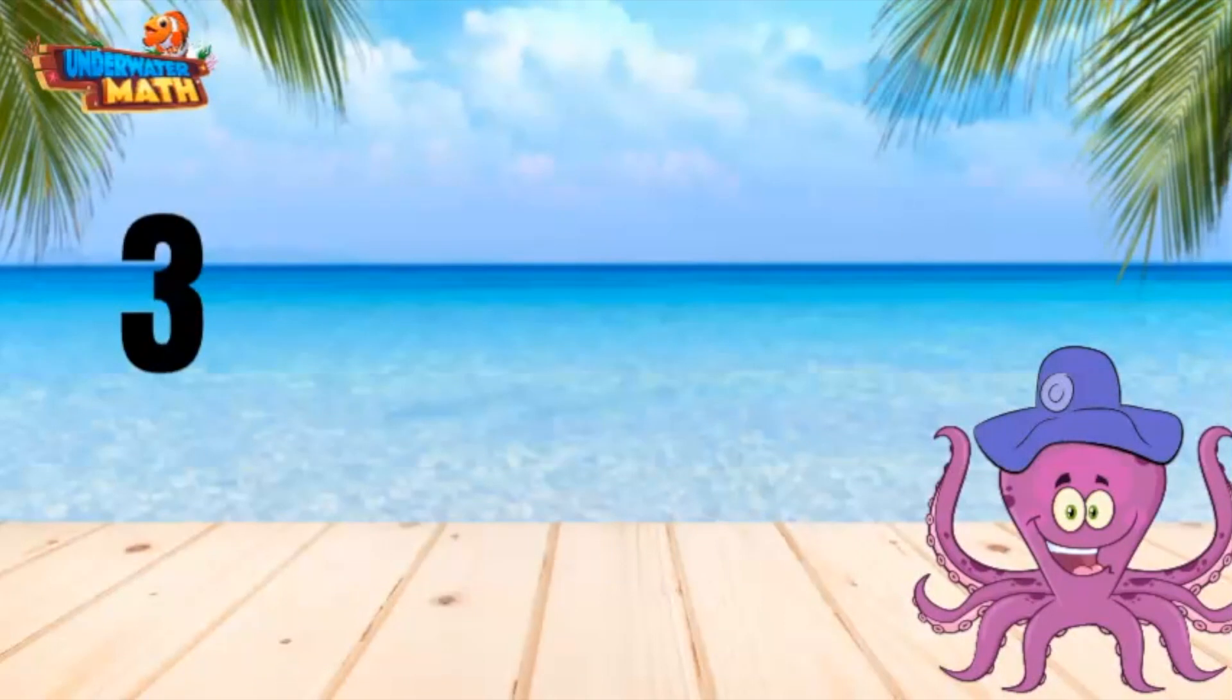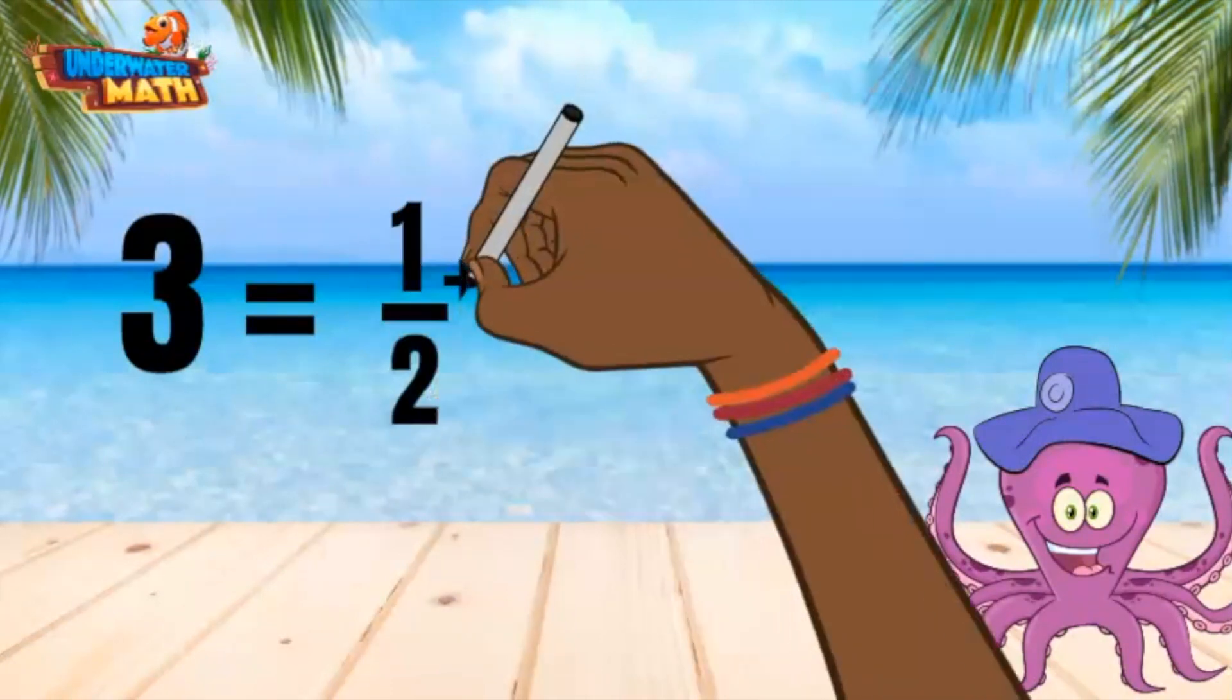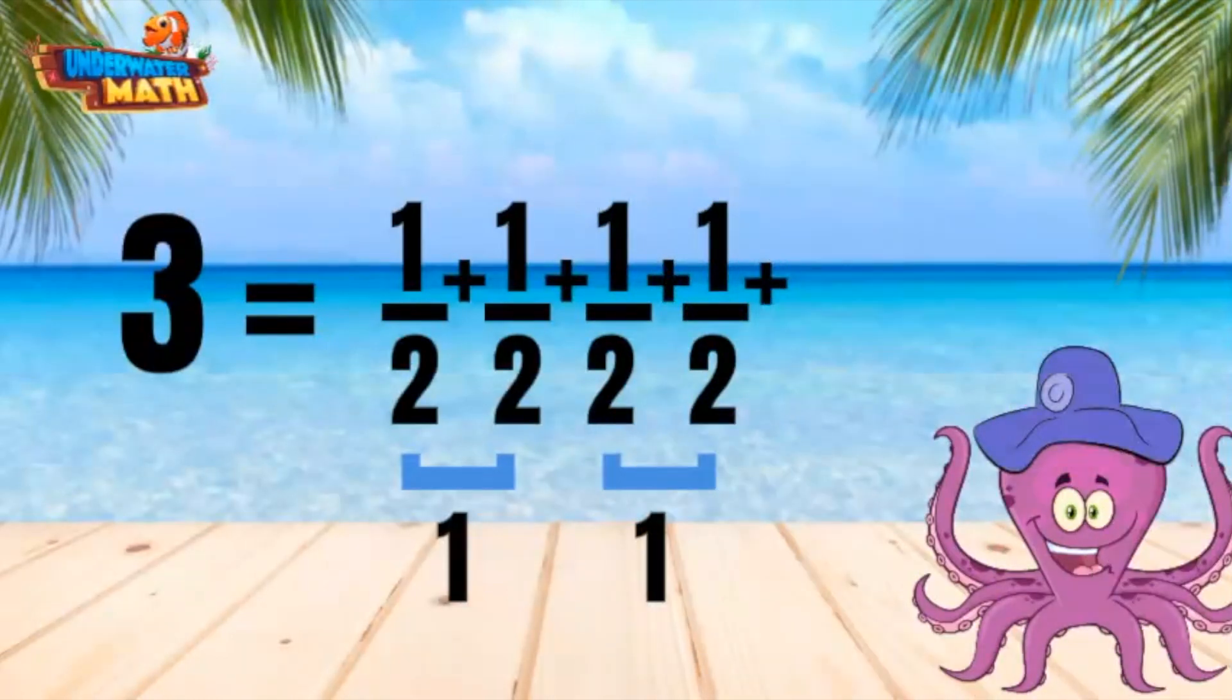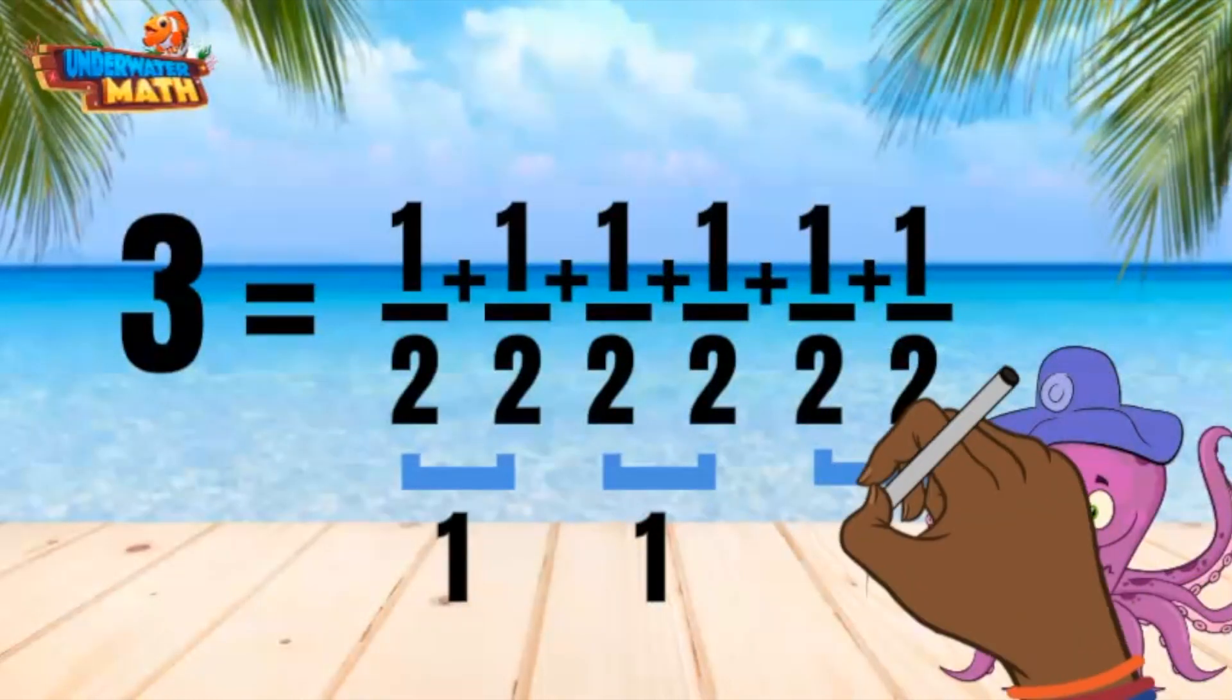I can express three as a sum of unit fractions using halves. I know that if I add one-half two times, that makes one whole. I will need to do this two more times to make three wholes. We can see now that we have 1 + 1 + 1, which makes three wholes. I needed six sets of one-half to make three wholes.